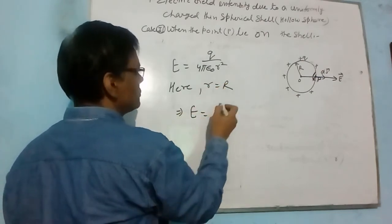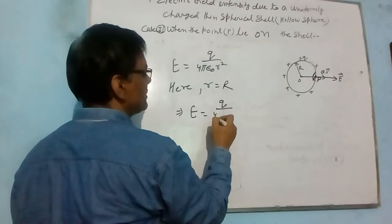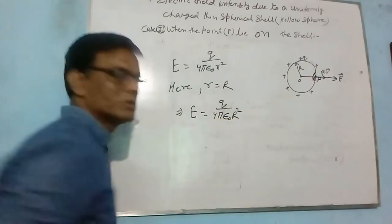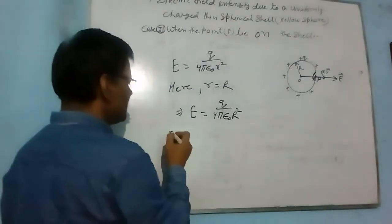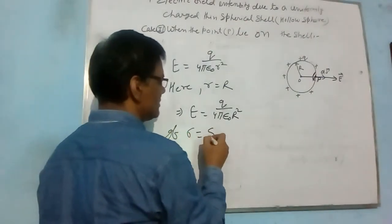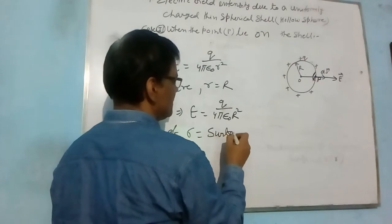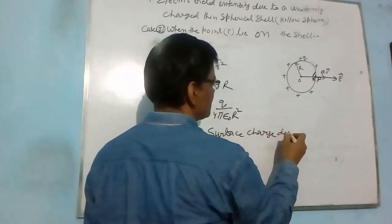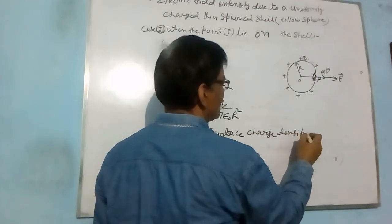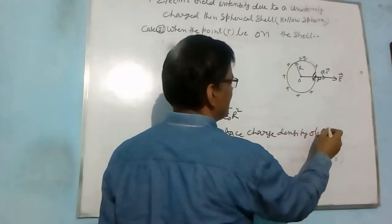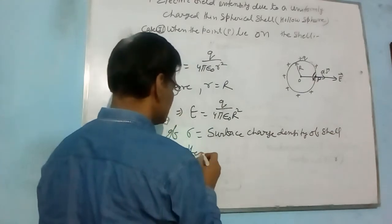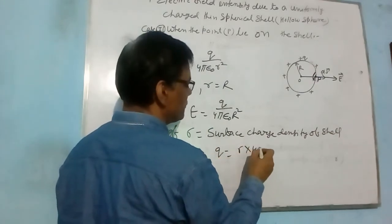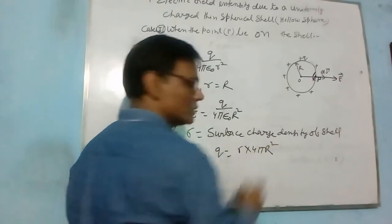The point P is here, R is equal to R. So E equals to Q by 4πε₀R². Now, if σ is the surface charge density of shell, then Q equals σ into 4πR².